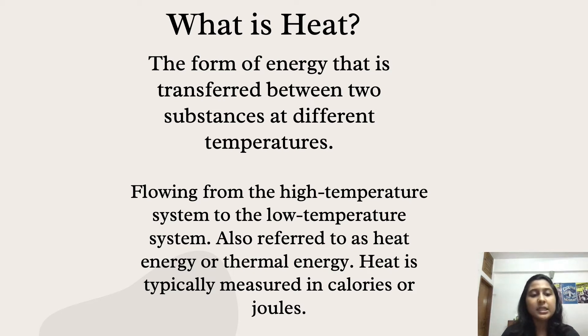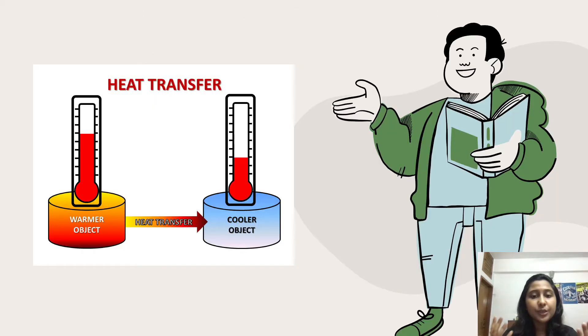Heat is typically measured in calories or joules. As you can see in this image, here is a warmer object and here is a cooler object. Heat is the transfer of energy from warm object to a cool object, so here the heat is being transferred from a warm object to a cool object.